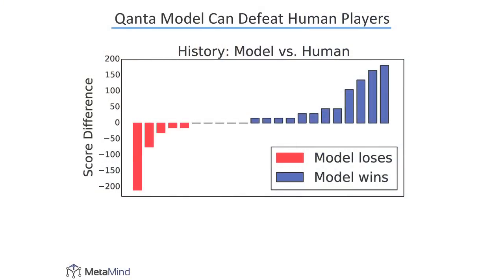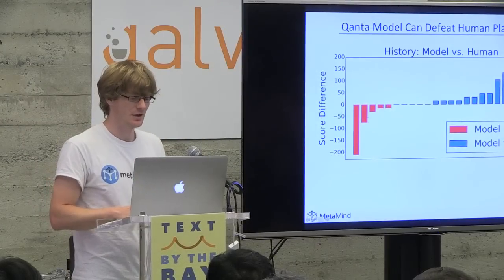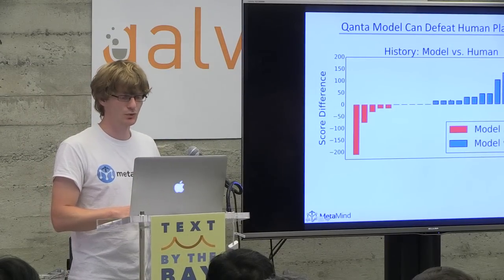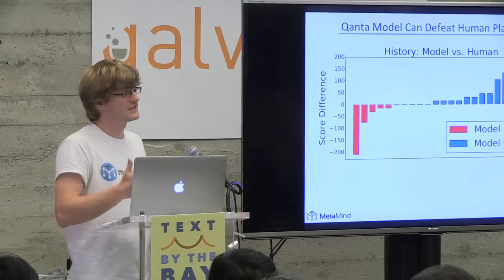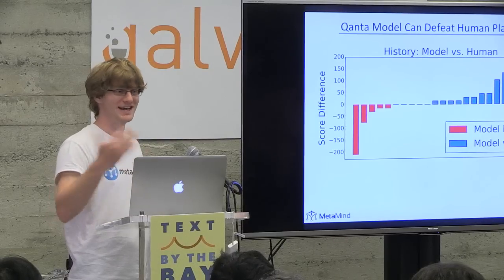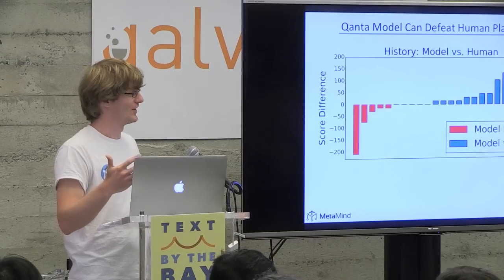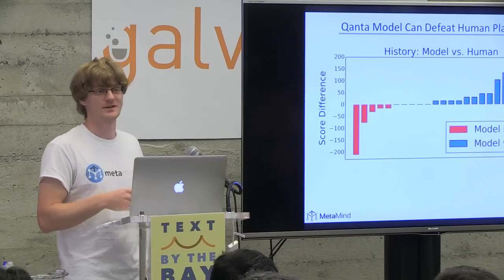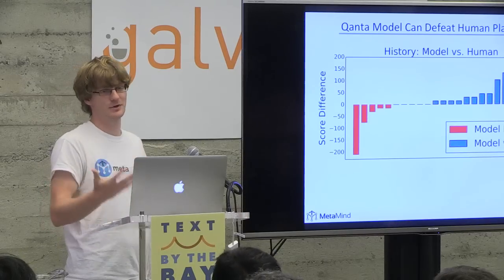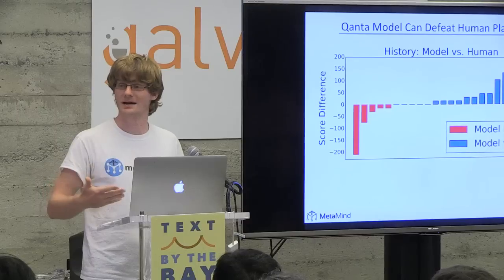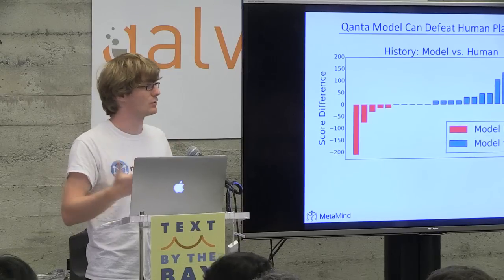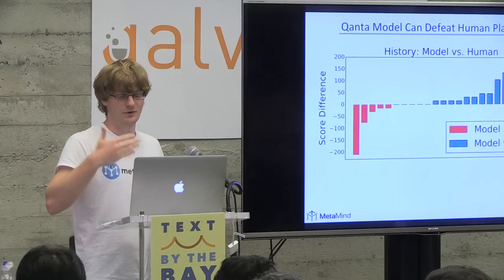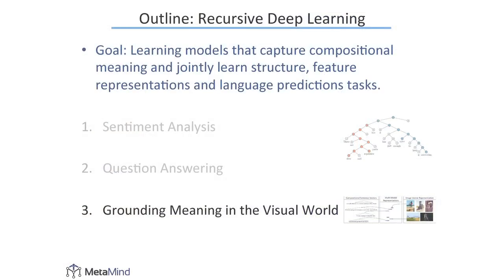This recursive neural network model can actually defeat human players in Quiz Bowl — each column is a game a person played against the computer, and blue means the model wins. Nowadays this may not seem amazing since we've seen IBM's Watson win Jeopardy, but the key difference is that IBM's Watson was built over many years by a gigantic team with hundreds of millions of dollars. This was built by one graduate student using deep learning. That gives you an idea of the power of automatically learning features for your task with deep learning versus writing regular expressions and curating word lists.